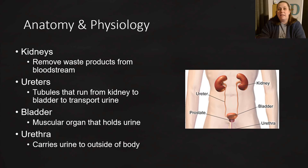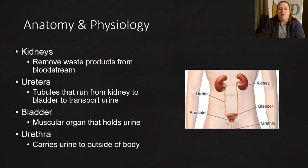The kidneys have a special structure called the nephron that actually does the filtering. In that process, there's a lot of back and forth: cleaning the blood and preparing the urea that eventually becomes urine. Once urine is created, it leaves the kidney through the ureters — tubes that run from the kidney to the bladder, transporting the urine. The bladder is a muscular organ that stores urine, and the urethra is the tube that goes from the bladder to the outside world.